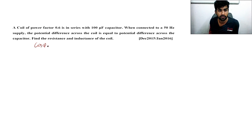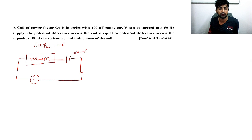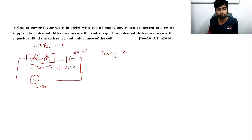Next problem: a coil with power factor cos φ = 0.6 is connected in series with a 100 microfarad capacitor. The supply is 50 Hz. Find R and L. The condition given is that the potential difference across the coil equals the potential difference across the capacitor, i.e., V_coil = V_C. Since Z_coil × I = Xc × I, the currents cancel and Z_coil = Xc.